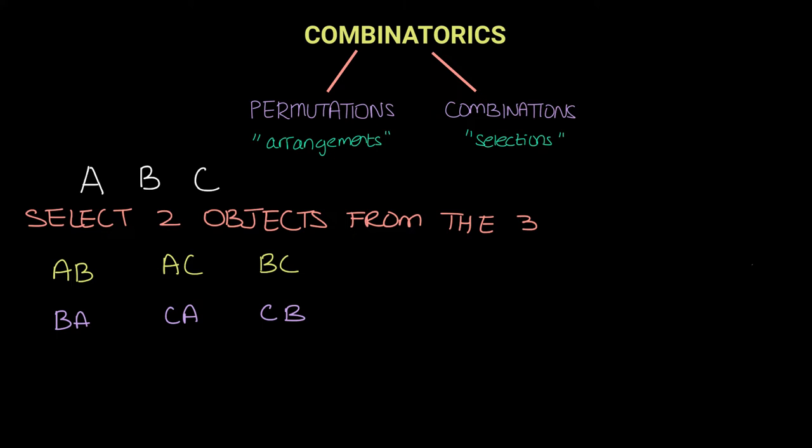So to summarize what has happened here, we can see that when we are selecting two objects from the three, there are actually just three combinations but there are six permutations, so there are six ways of arranging two objects from three.